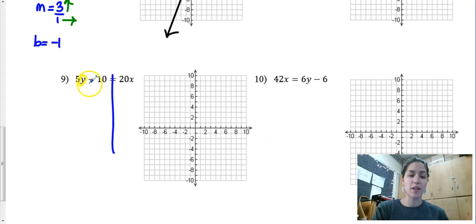I'm hoping we're all thinking to ourselves right now this negative 10 can go. I agree. So the opposite or the inverse of subtracting 10 is adding 10. So plus 10 plus 10. Line all the way across. I have 5y equals 20x plus 10.